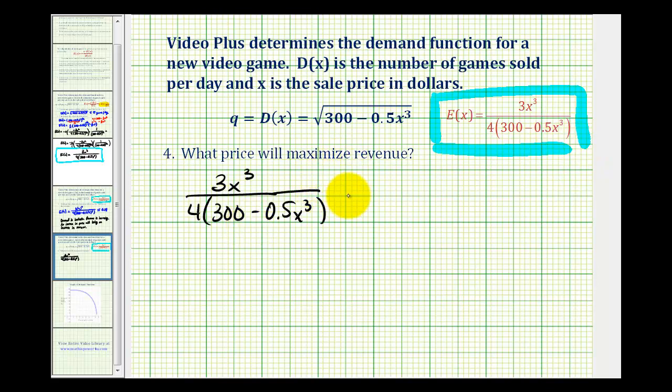So we want to know when this is equal to 1, and I'm going to write 1 over 1. So to solve this, we can cross multiply. So 3x cubed must equal 4 times the quantity 300 minus 0.5x cubed.